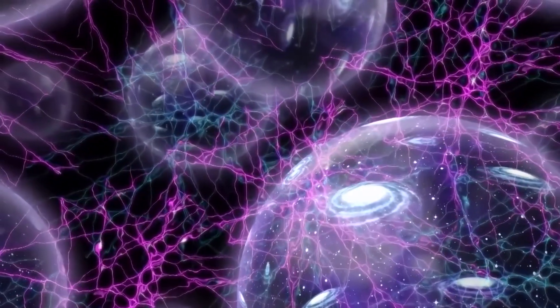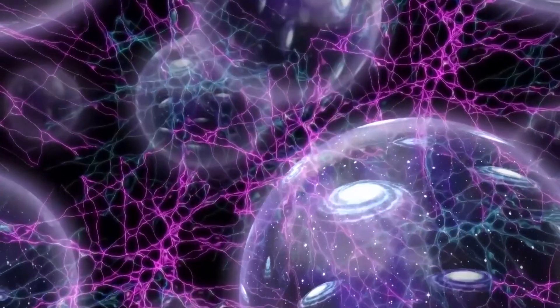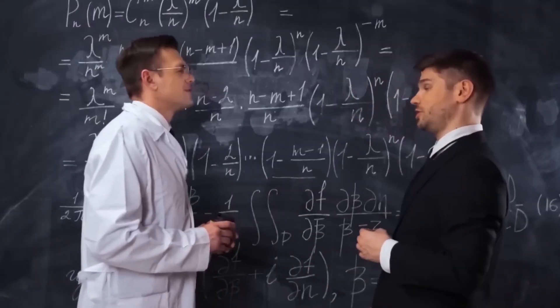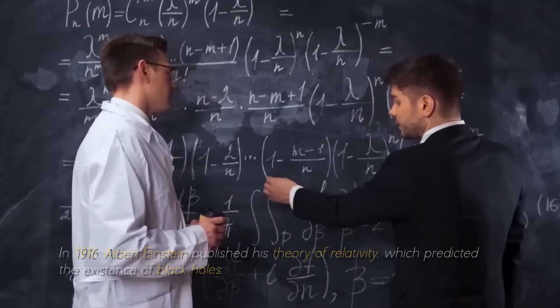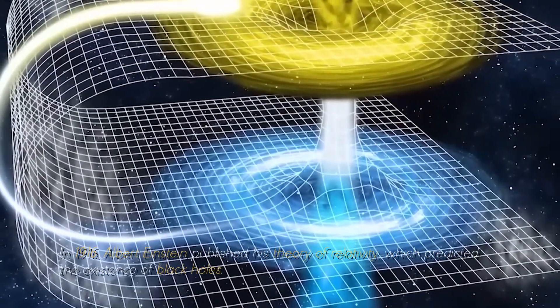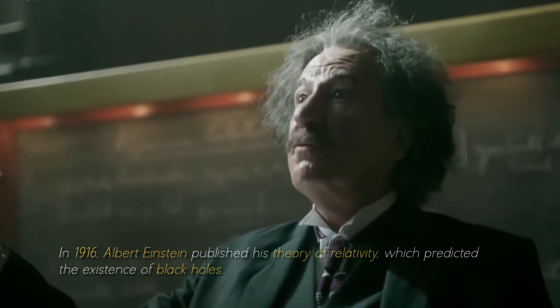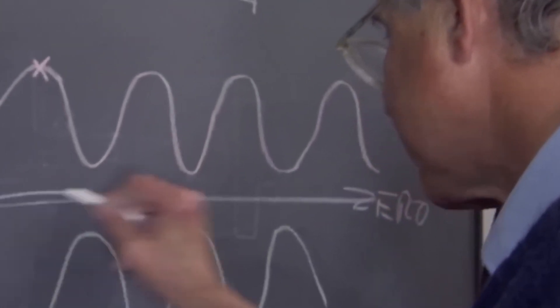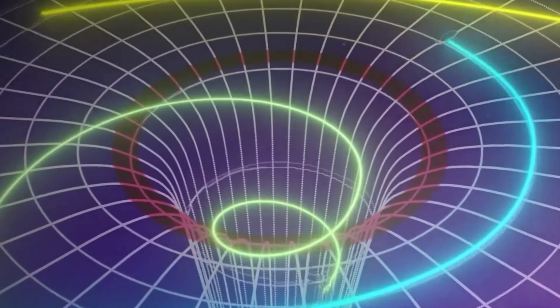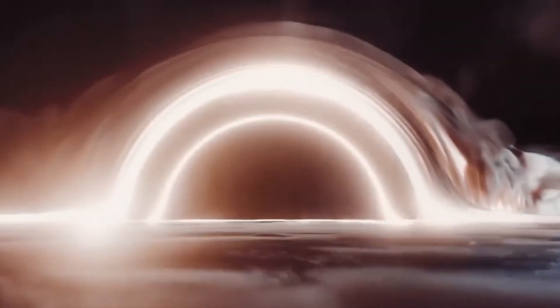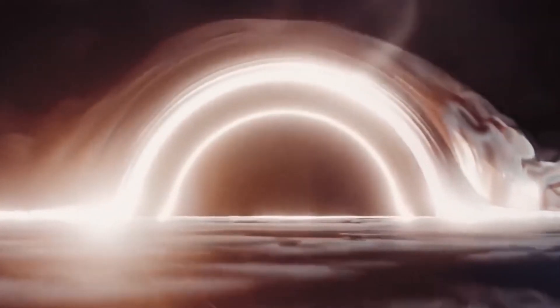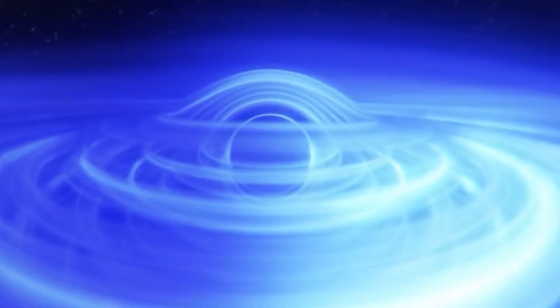Although many of us have a general idea of what black holes are, there are still some gaps in our knowledge. In 1916, Albert Einstein published his theory of relativity, which predicted the existence of black holes. At that time, the concept of black holes was purely theoretical. It was necessary to wait another 50 years for the scientific community to find evidence of their existence.